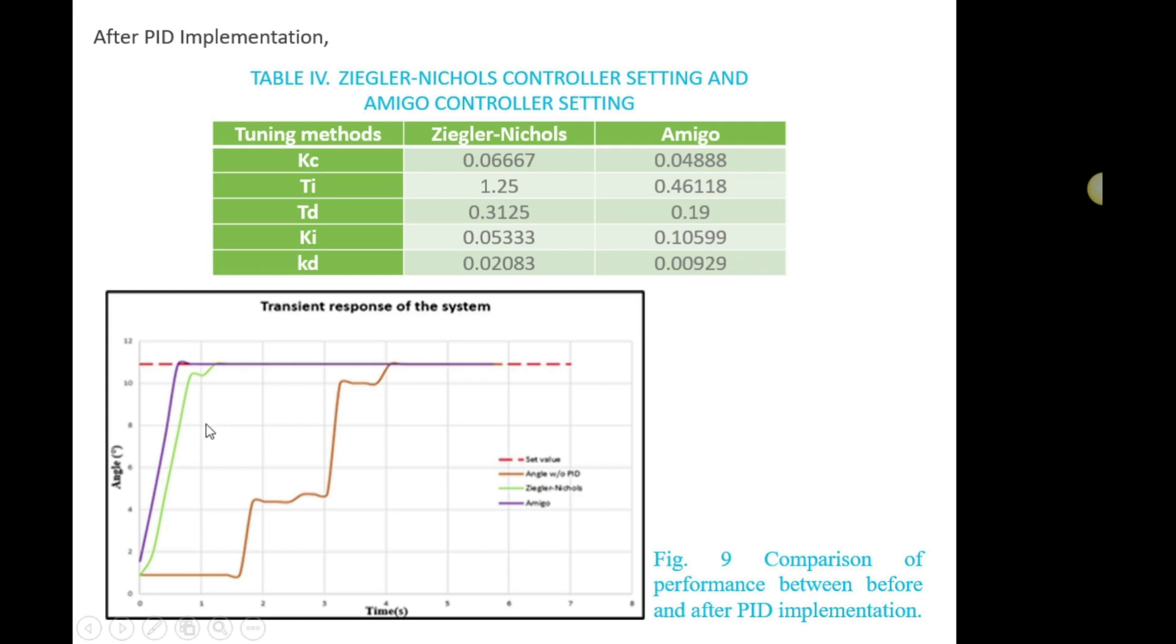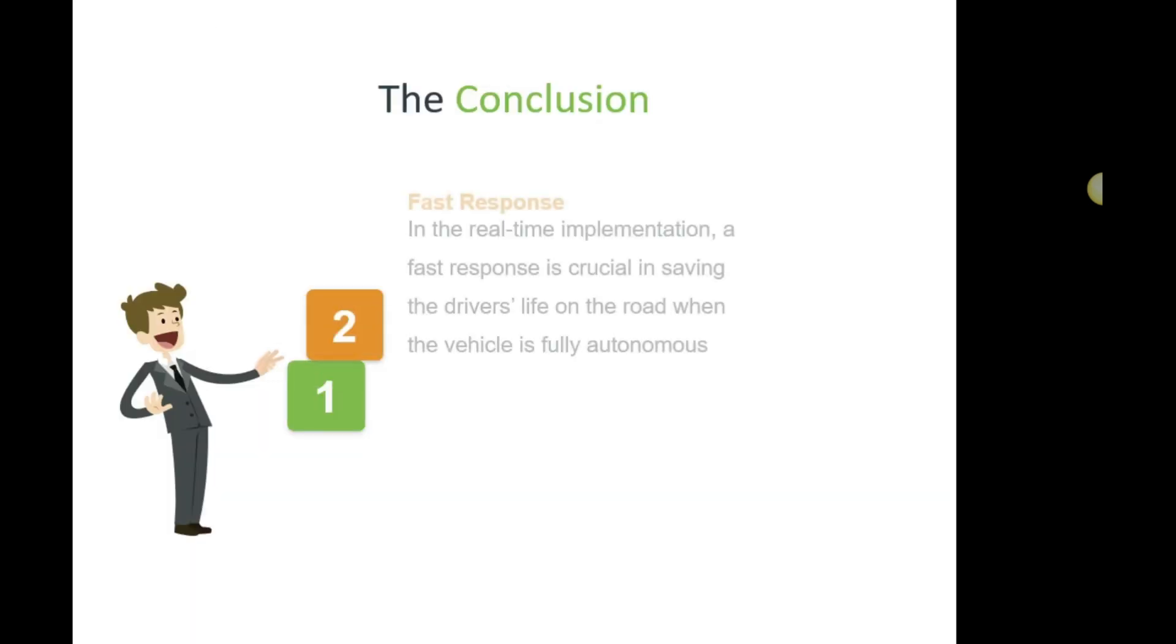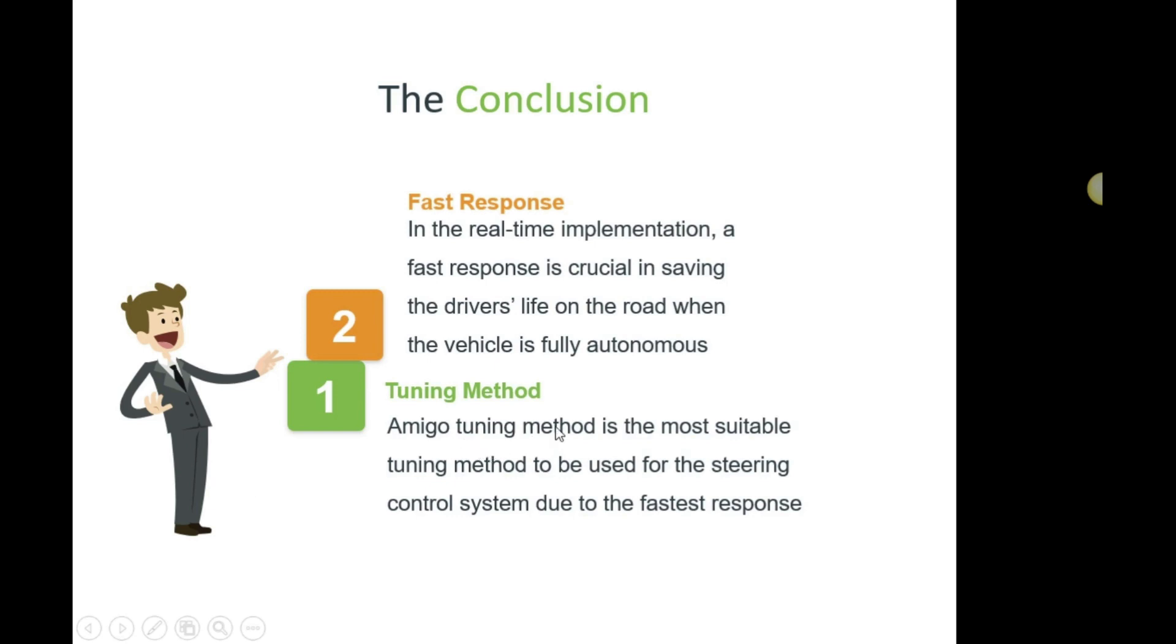As a conclusion, Amigo tuning method is the most suitable tuning method for the steering control system due to the fastest response. In real-time implementation, fast response is crucial in saving the driver's life on the road when the vehicle is fully autonomous. That's why Amigo tuning method is preferred.